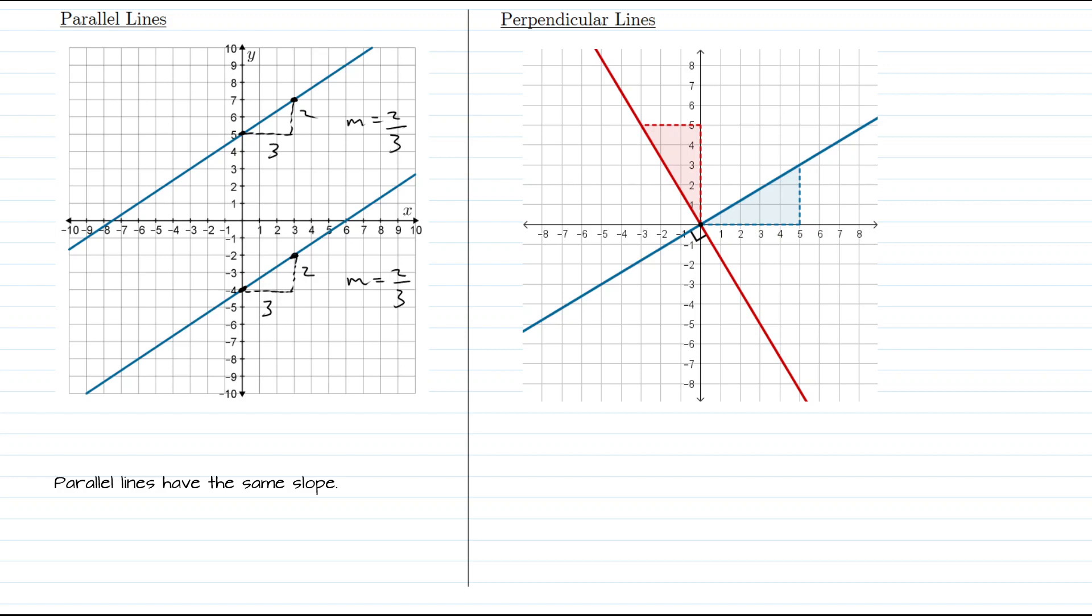Notice what happened to the rise and run values. When we rotate, what used to be the run is now actually the rise, and what used to be the rise is now the run. It's very important that we notice the sign of our slope has changed. Our original blue line rose from left to right, so it has a positive slope. When we rotate that 90 degrees, we end up with a line that decreases or goes down from left to right, so that will have a negative slope.